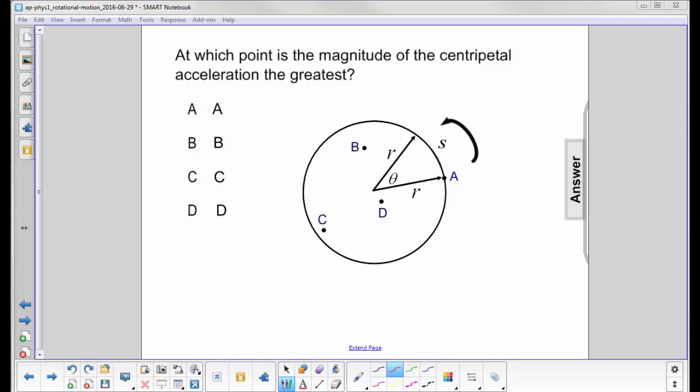At which point is the magnitude of the centripetal acceleration the greatest? You know from previous units that centripetal acceleration is v squared over r. So if you just looked at this, you would think the greatest centripetal acceleration would be somewhere closer here because r gets smaller.